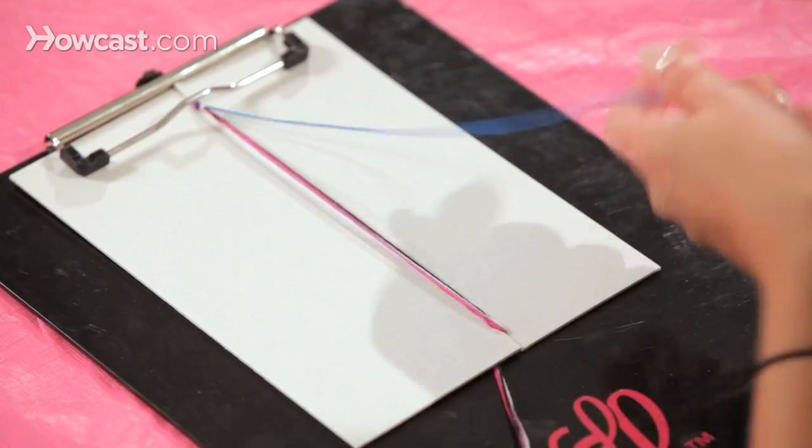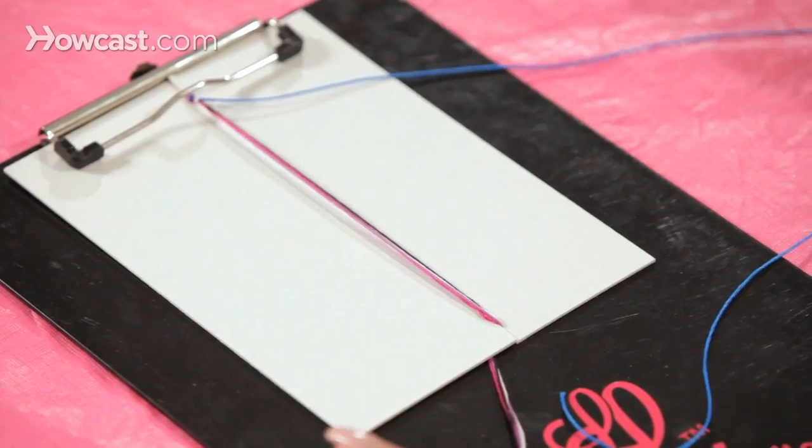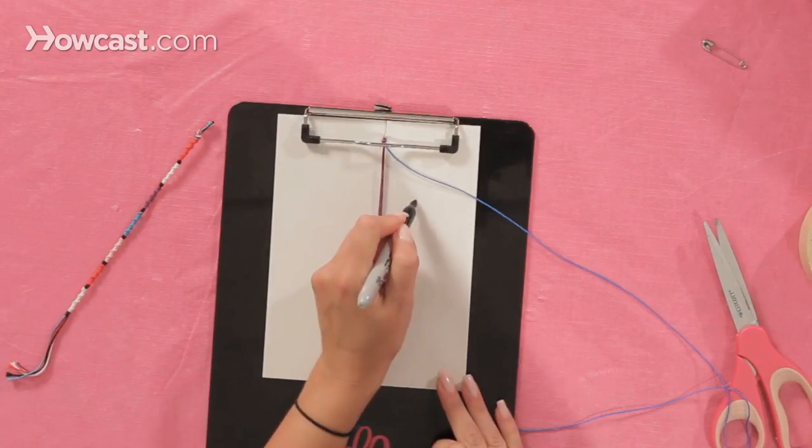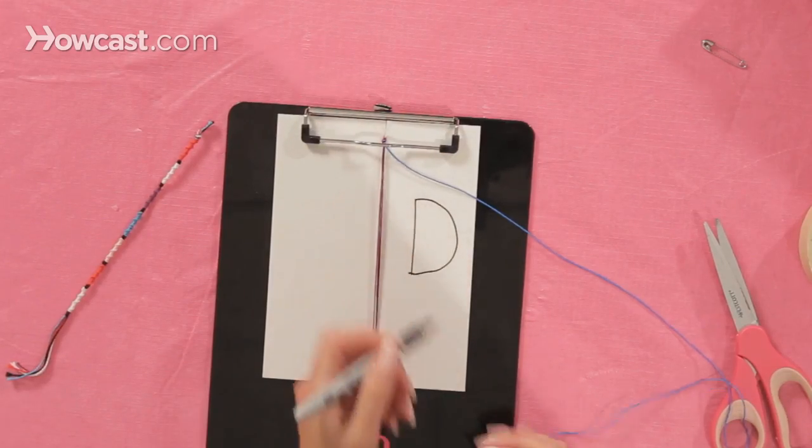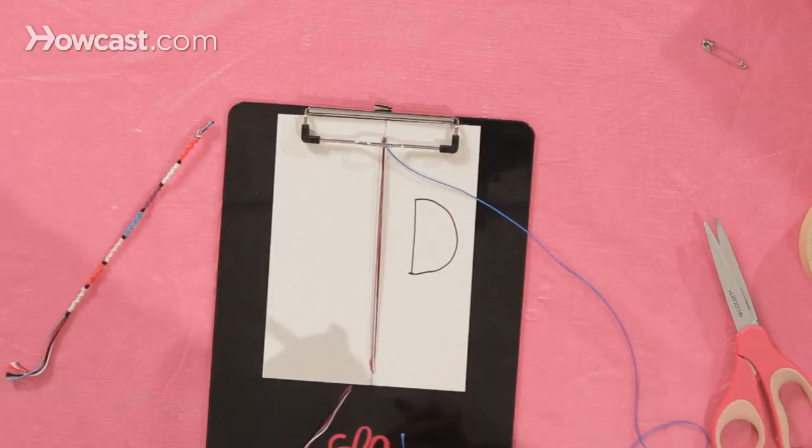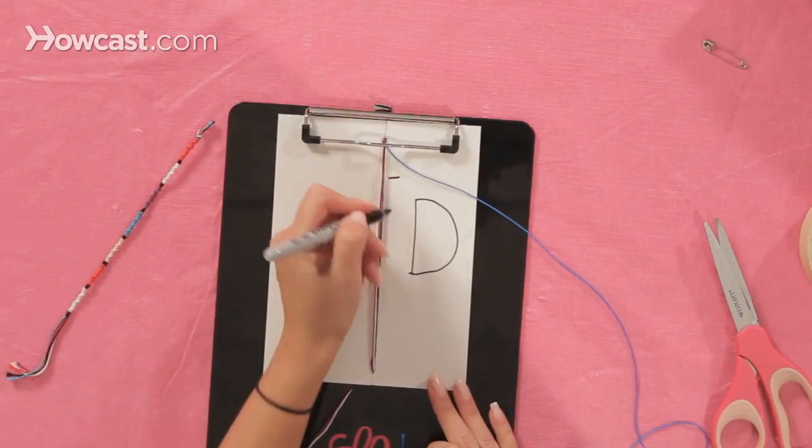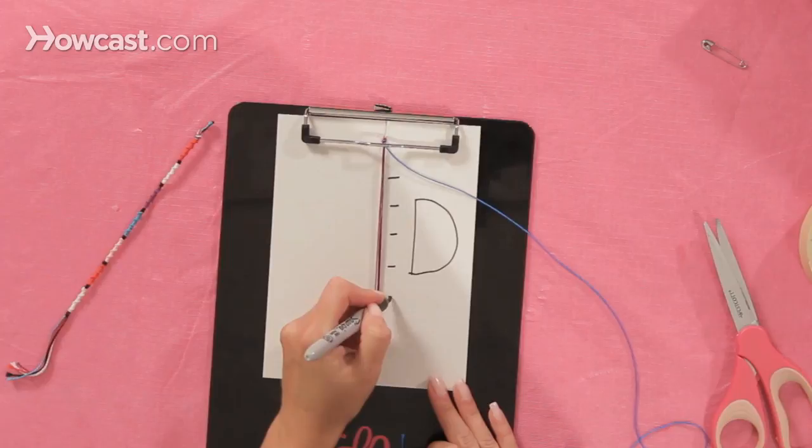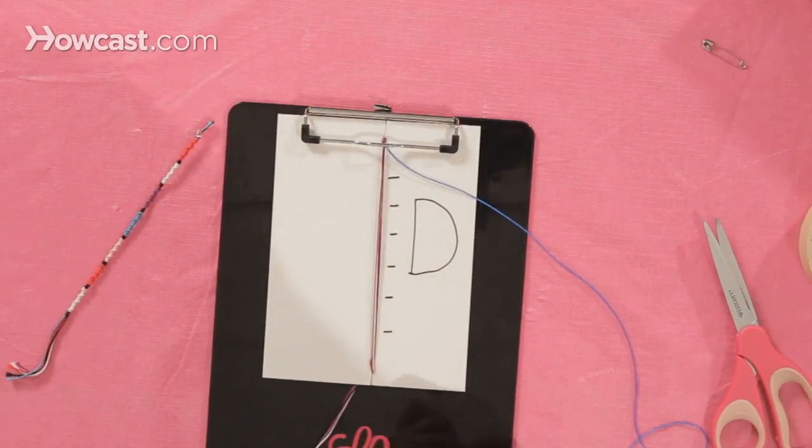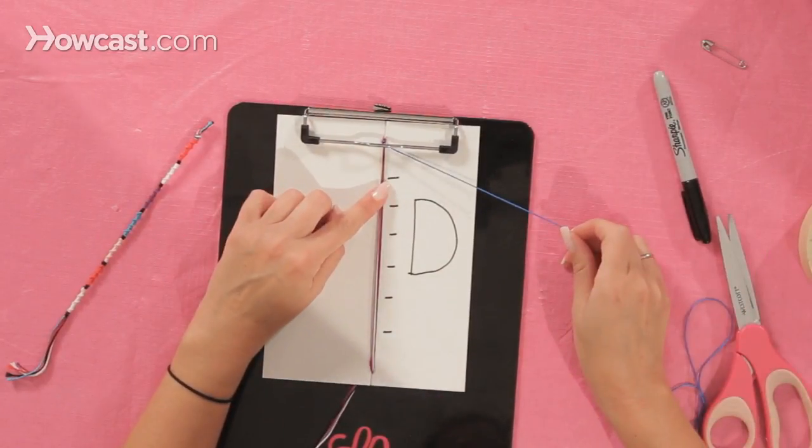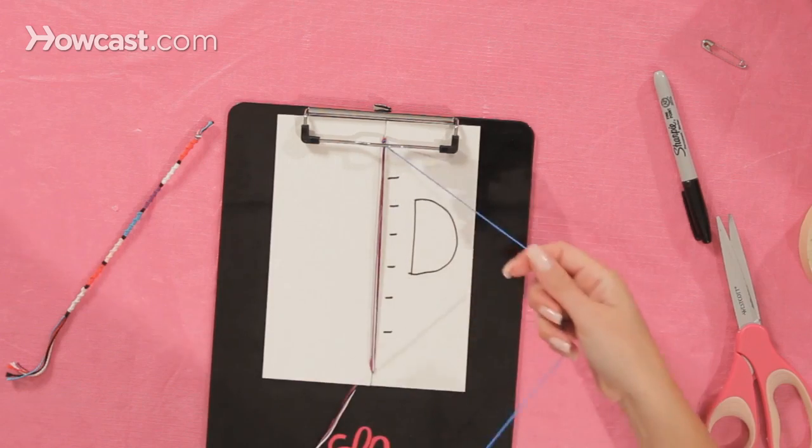Now, in order to make a Chinese staircase, you're going to be doing a backward knot, which is your D. You can put a D on your board to help remind you, and we can also make some lines here to show you where you're going to change the color. When your blue gets to this first line, that's when we're going to change our color.